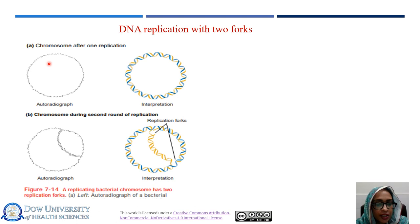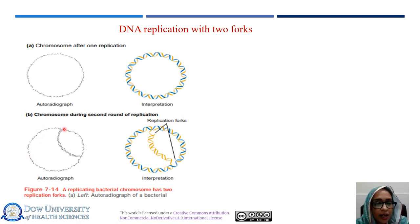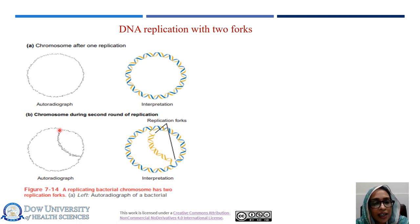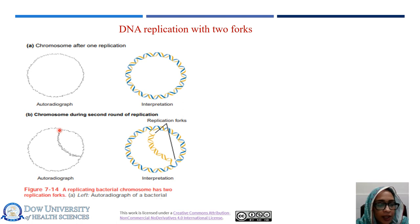In the second replication cycle, the forks predicted by the model were indeed seen — referred to as figure B. This structure is initially referred to as the theta model, observed when cells continue to grow in the presence of ³H tritium, now containing two radioactive strands visible as a result of the growing daughter strands.